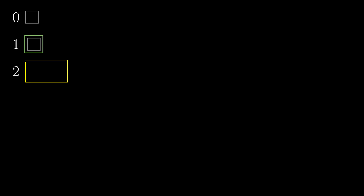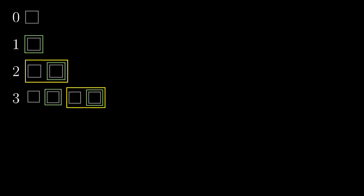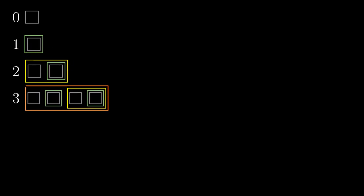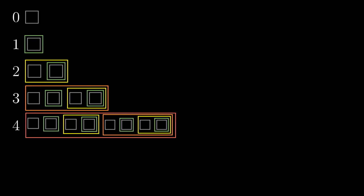0 is the empty set. 1 is the singleton set containing the empty set — so far it is the same. 2 should be a set with two elements; so far we have constructed 0 and 1, so 2 will contain 0 and 1. 3 contains 0, 1, and 2, and so on.